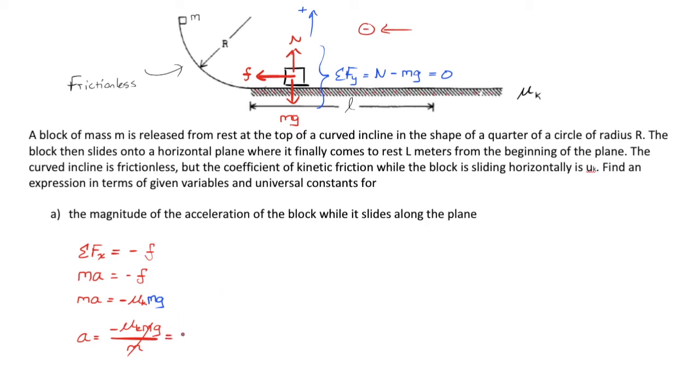The acceleration equals negative mu k g, as it often is when friction is the only force in play. They asked for the magnitude of the acceleration. That means we can ignore the fact that our answer mathematically turned out to be negative, naturally in agreement with the fact that the box should be slowing down. The magnitude of the acceleration is mu k g.